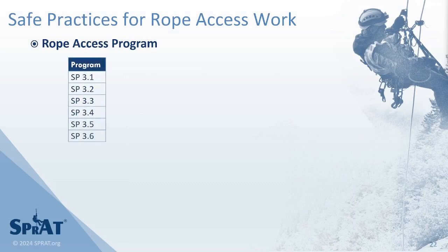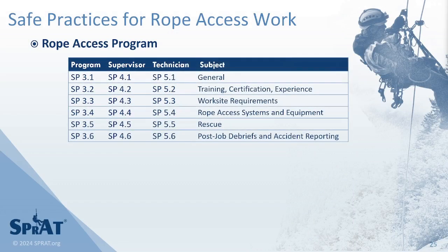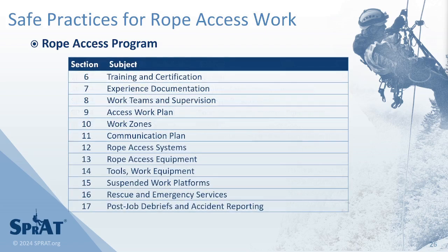Sections 3, 4, and 5 present the requirements and responsibilities of the rope access program and personnel through parallel subsections, depicted in the table presented here. Subsequent sections of Safe Practices for Rope Access Work provide further details of requirements for rope access systems, rope access equipment, and the administrative and training requirements of a rope access program.